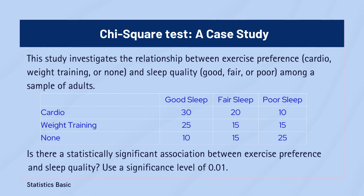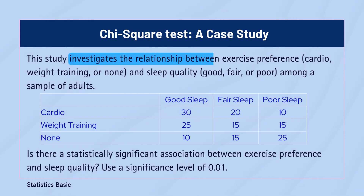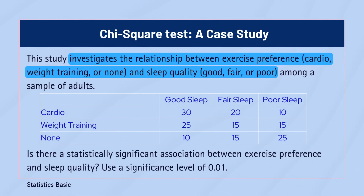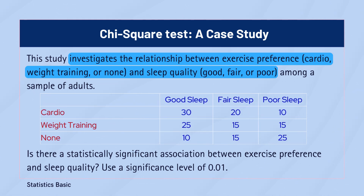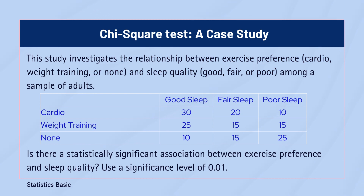Let's consider the following case study, where we want to investigate the relationship between exercise preference and sleep quality. A sample of adults was categorized into three exercise groups — cardio, weight training, and none. Their sleep quality was then rated as good, fair, or poor. The data is presented in a two-way contingency table.